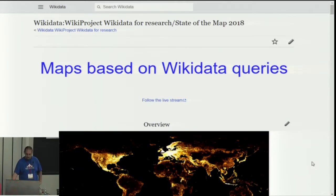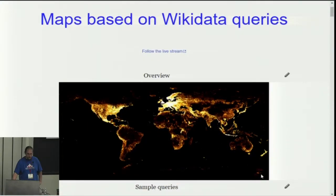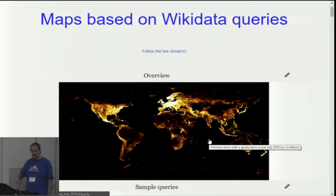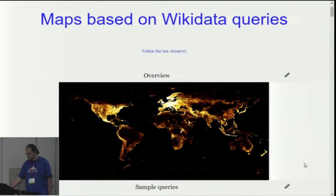Here you have an overview slide. This map represents items in Wikidata that have a geolocation, and the color kind of gives you the density. For any of those images embedded on the page, if you click on them, you get details on the methodology, the queries, and things like that. I don't have time to go into this.